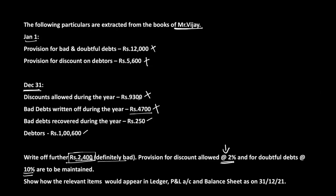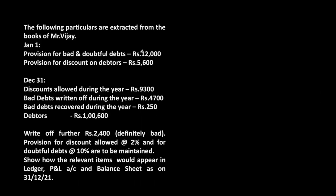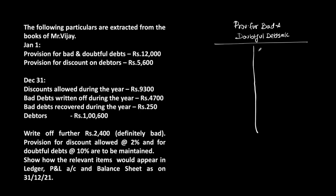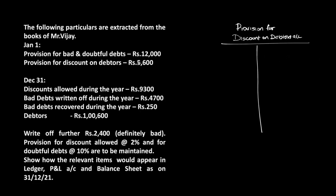We will open respective ledgers and attack them one by one. Ledger 1: Provision for bad and doubtful debts account — opening balance on 1/1/21 by balance brought down is 12,000. We also open Provision for discount on debtors account — opening balance on 1/1/21 by balance brought down is 5,600.